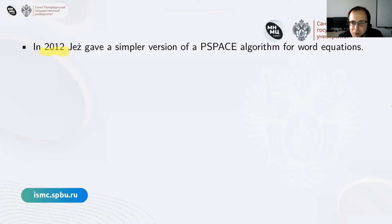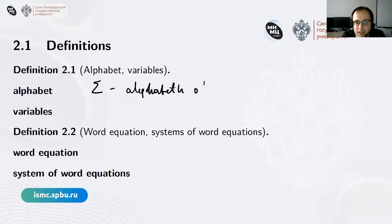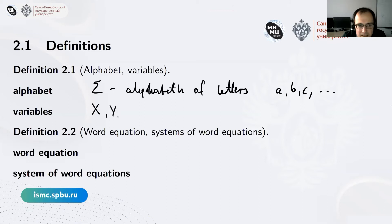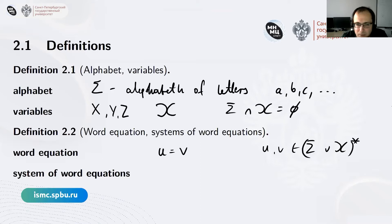So that's the introduction for today's lecture. Let us fix some notions just to be sure we're on the same page. Word equations contain letters (constants) and variables. I will use sigma for the alphabet of letters, denoting them by small letters like a, b, c, and the variables by capital letters. If needed I'll use calligraphic X to denote the set of variables. Of course, sigma and the variable set are disjoint.